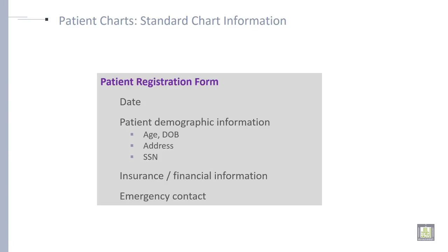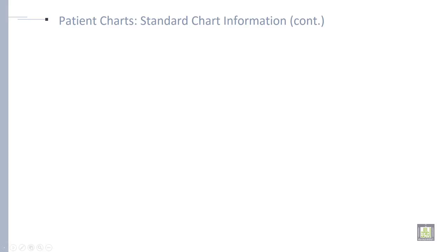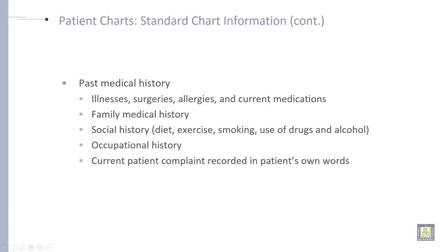Patient chart — patient registration form. This is just an example, a demo of the patient chart. Information that should be included: date, patient demographic information like age and date of birth, address, social security number — in Saudi Arabia, for example, the Iqama number or student identification number — then insurance and financial information, and emergency contact number. Past medical history is also included.